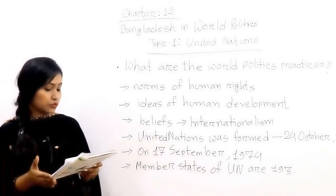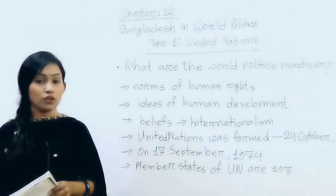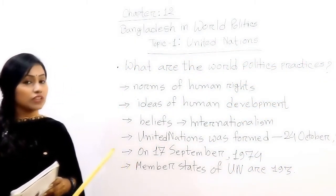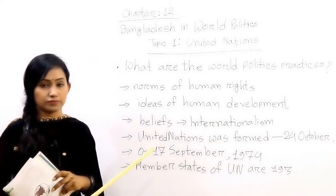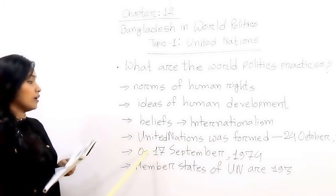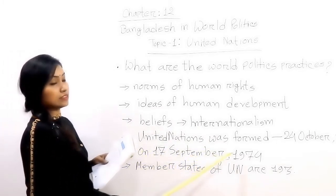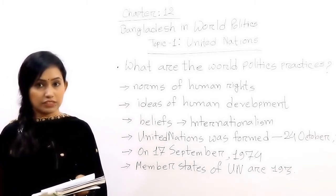That is why the United Nations was formed on 24 October 1945, after the losses of the Second World War. The United Nations was formed on 24 October 1945. And then, on 17 September 1974, Bangladesh joined the United Nations.